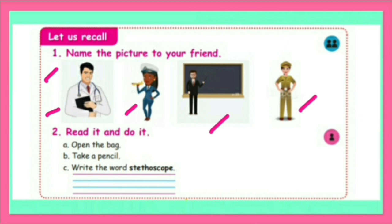Number 2: Read it and do it. A. Open the bag. B. Take a pencil. C. Write the word stethoscope. Children, take your bag, open the bag, take a pencil from your pencil box, and write the word stethoscope here.